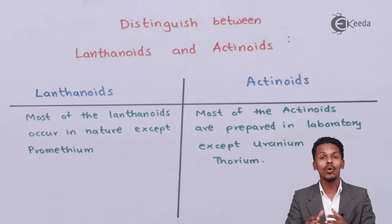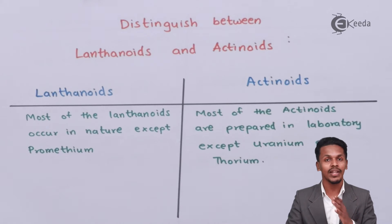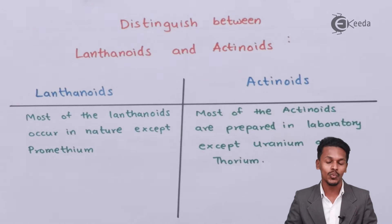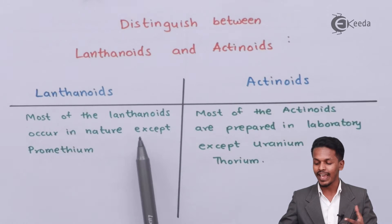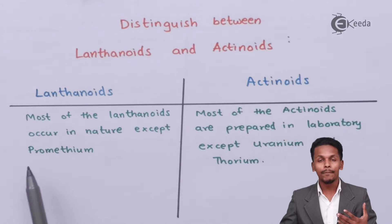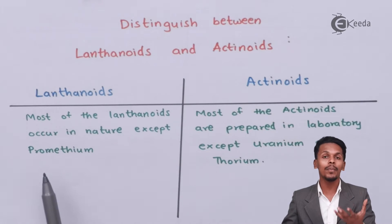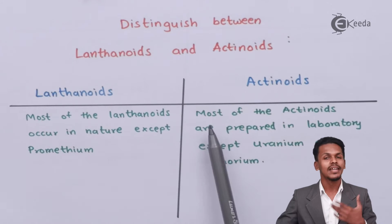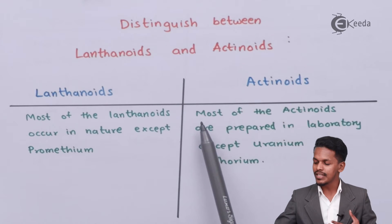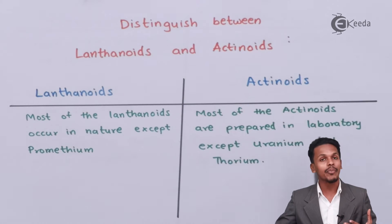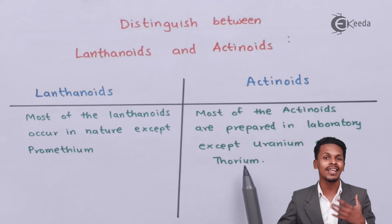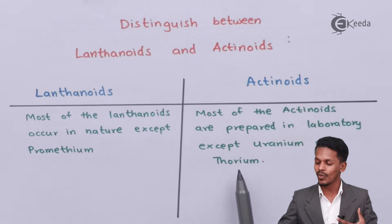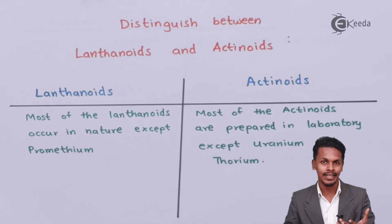Apart from that, most of the lanthanoids occur in nature except Promethium, which is a synthetic element. Talking about actinoids, most of them are prepared in the laboratory except Uranium and Thorium, which are present in nature, while the rest can be synthesized.